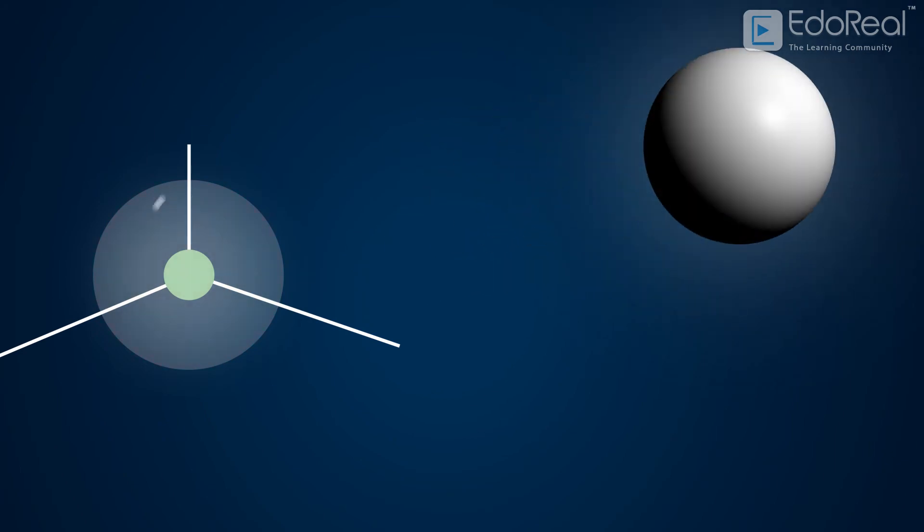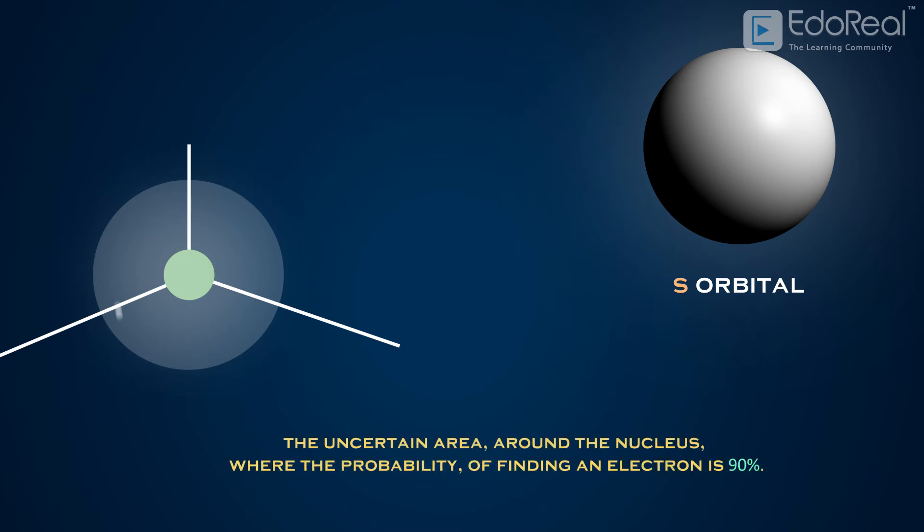This three-dimensional space looks spherical in shape, from which it got the name s orbital. An orbital is defined as the uncertain area around the nucleus where the probability of finding an electron is 90%.